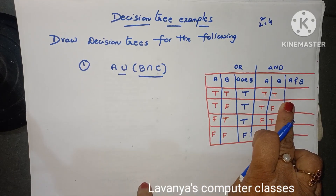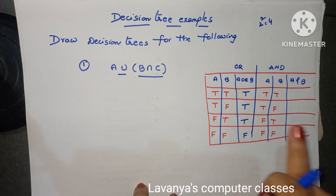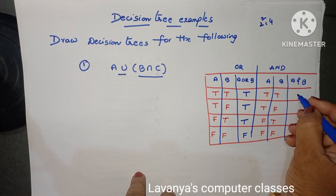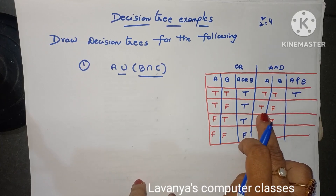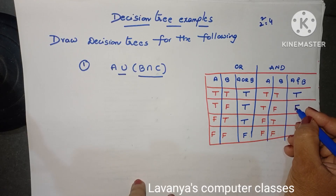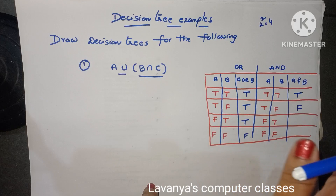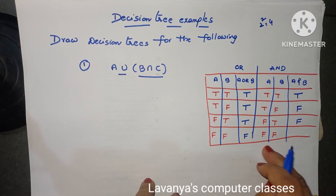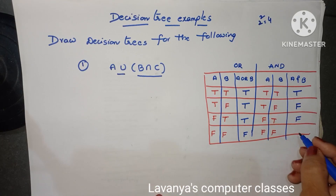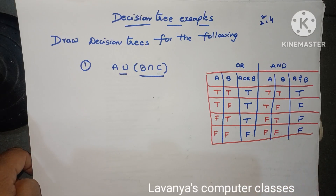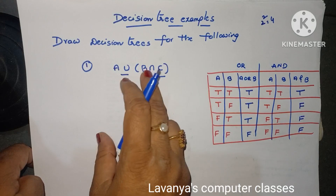Similarly, for the AND operator: all the conditions must be true; if any one is false the total result is false. True and true — both are true, result is true. True and false — any one is false, result is false. False and true — it is also false. False and false — all are false, result is false. This is the AND and OR operator working process using the truth table. Now we draw a decision tree.